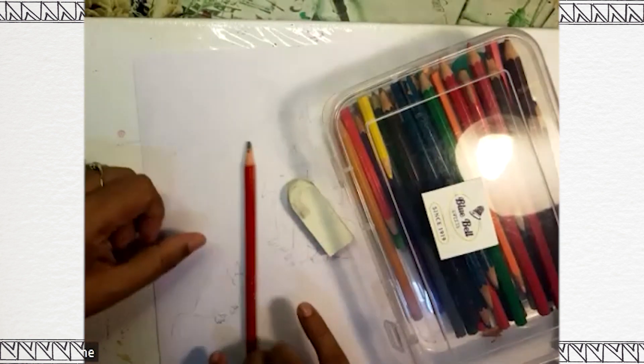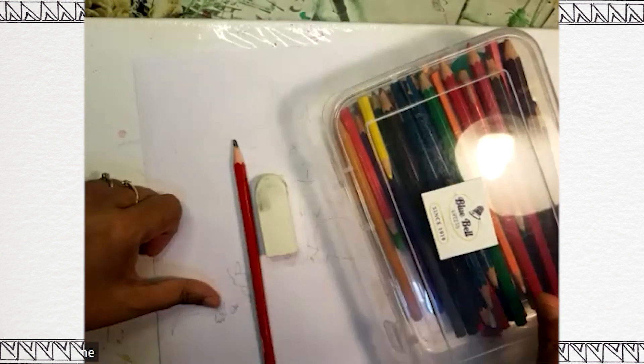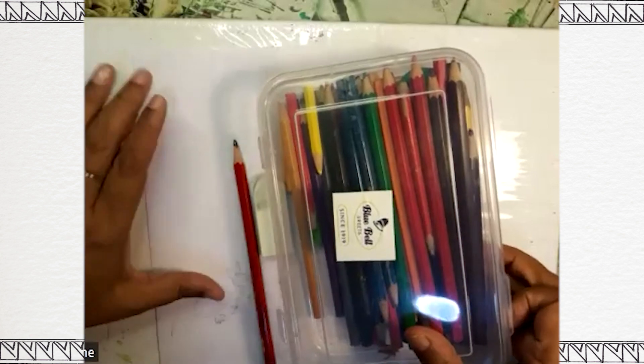To draw the lion and the mouse, we need a pencil, eraser, pencil colors, and one paper. So let's start drawing.